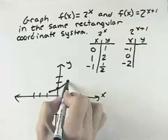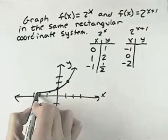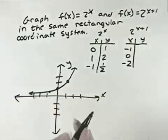This would be an exponential equation that goes up to the right, which means the x-axis is the asymptote that it approaches to the left.